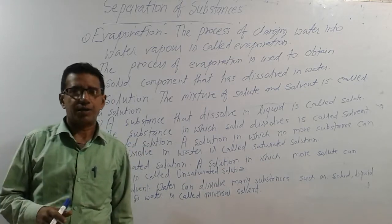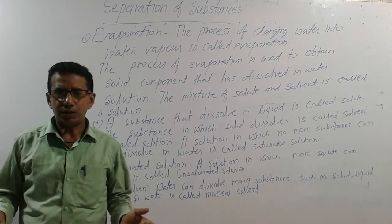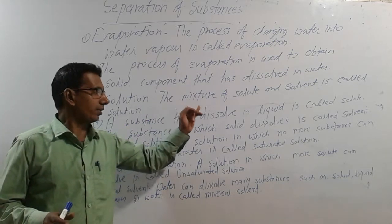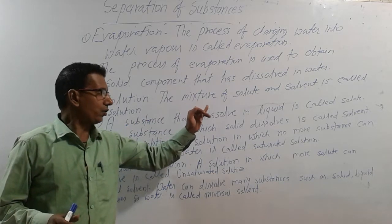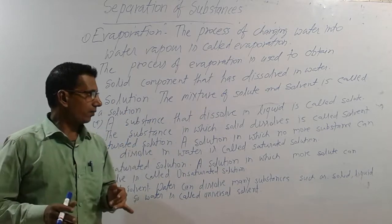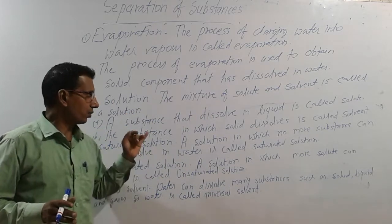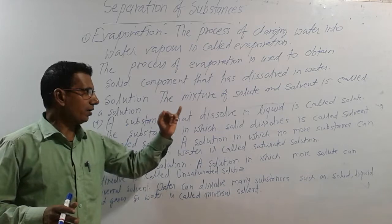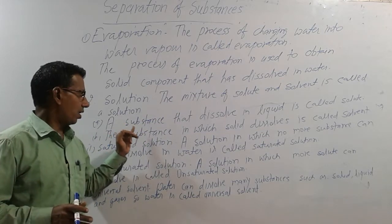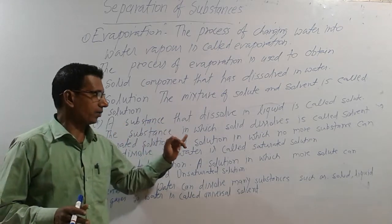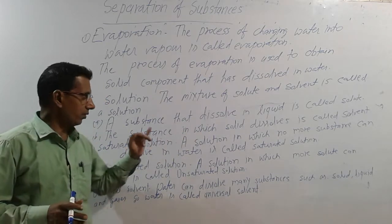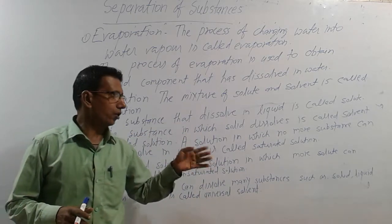Now we have to learn about solution. The mixture of a solid substance and liquid is called a solution, or we can say that the mixture of solid solute and solvent is called a solution. Here we have two terms: solute and solvent. A substance that dissolves in liquid is called solute, and a substance in which the solid dissolves is called solvent.